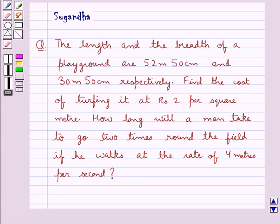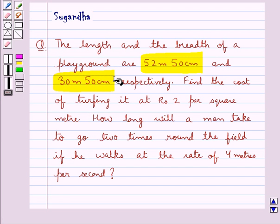Hello and welcome to the session. In this session we discuss the following question: The length and the breadth of a playground are 52 meters 50 centimeters and 30 meters 50 centimeters respectively. Find the cost of turfing it at rupees 2 per square meter. How long will a man take to go 2 times round the field if he walks at the rate of 4 meters per second?